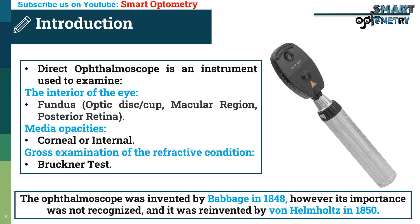The direct ophthalmoscope was invented by Babbage in 1847. However, its importance was not recognized and it was reinvented by von Helmholtz in 1850.